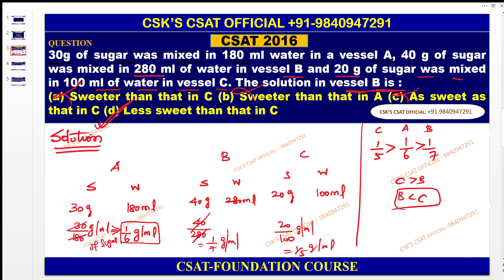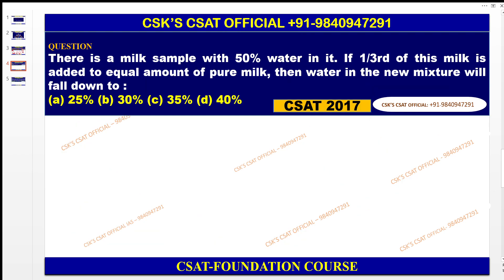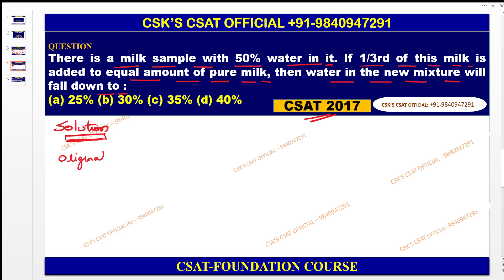Anyone having doubt? Shall I move on to the next? Fine. Next — year 2017. This question we have done during our foundation class, but we'll discuss it here. There is a milk sample with 50% water in it. One-third of this milk is added to an equal amount of pure milk. The water in the new mixture will fall down to — please try to understand, take some random values. You can take the original quantity.